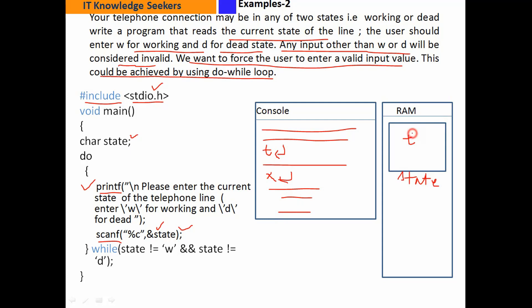जब हम कोई character input करते हैं तो पुरानी value replace हो जाती है new value के साथ। इसलिए हम input करते रहेंगे कोई न कोई character और जब तक हम valid input यानी W या D में से कोई value नहीं देंगे यह loop terminate नहीं होगा। I hope the whole concept and logic of this program is clearly understood.